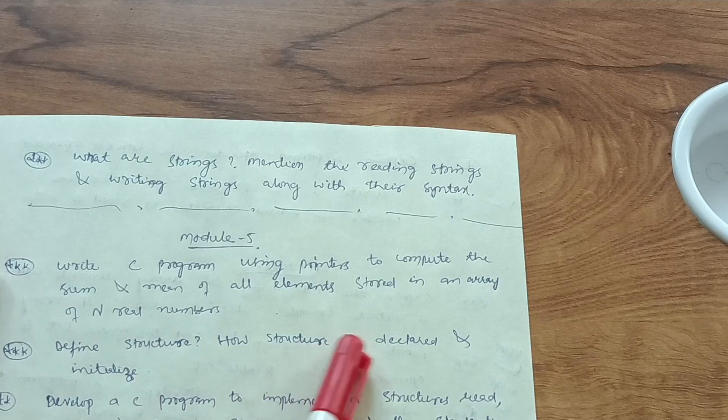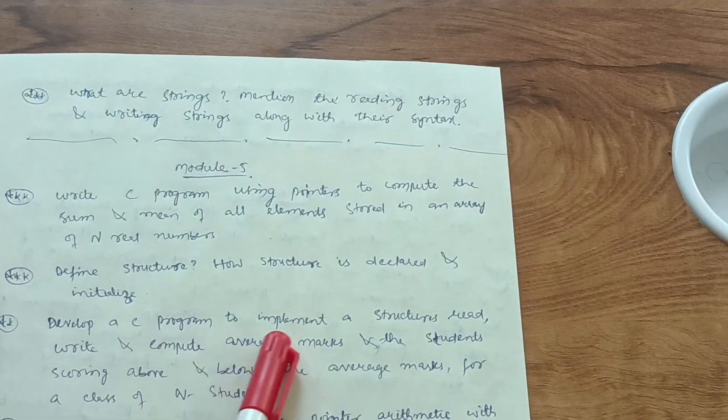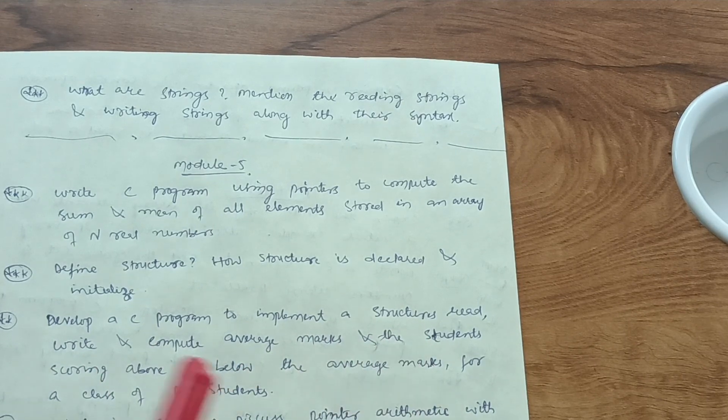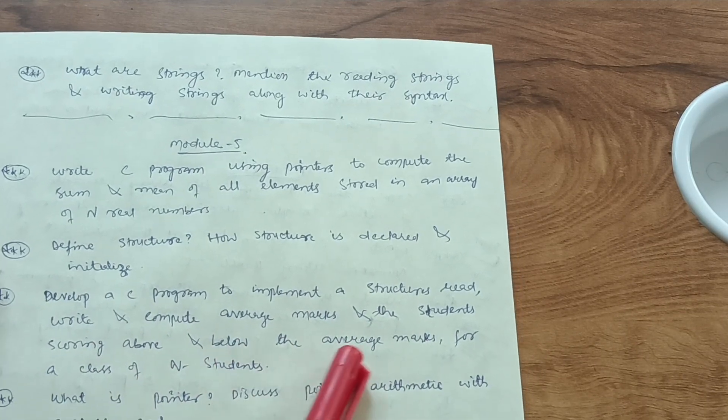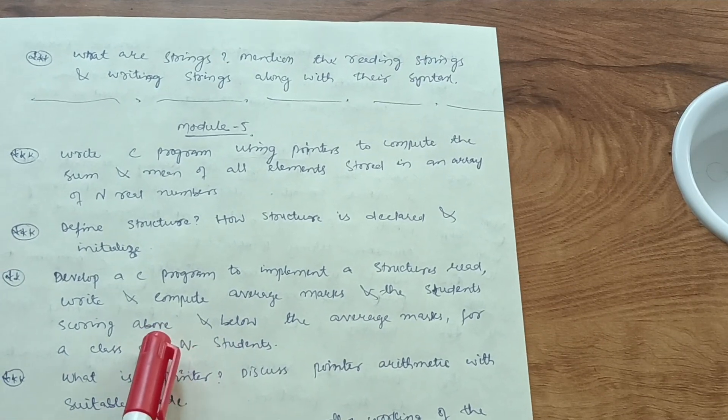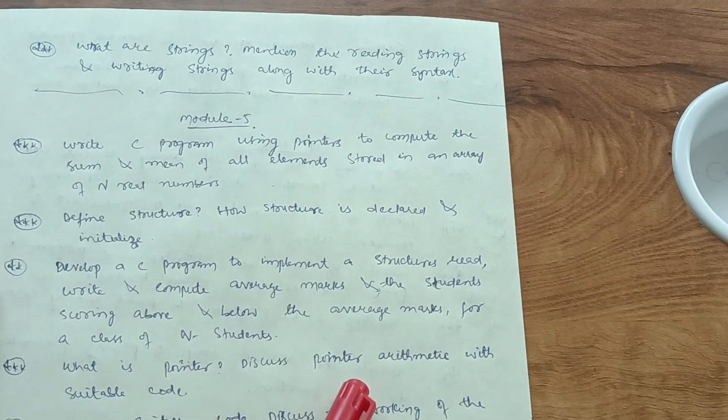Then develop a C program to implement structures. Read, write, and compute average marks and the students scoring above and below the average marks for a class of n students. It is a super important question in this particular module, so go through this program. And what is pointer? Discuss pointer arithmetic with suitable code.